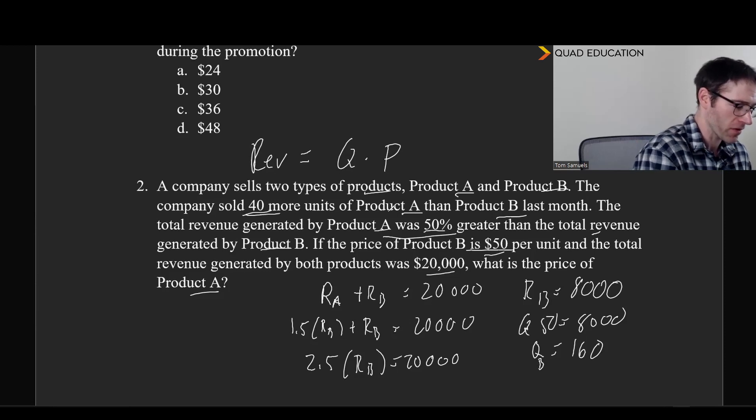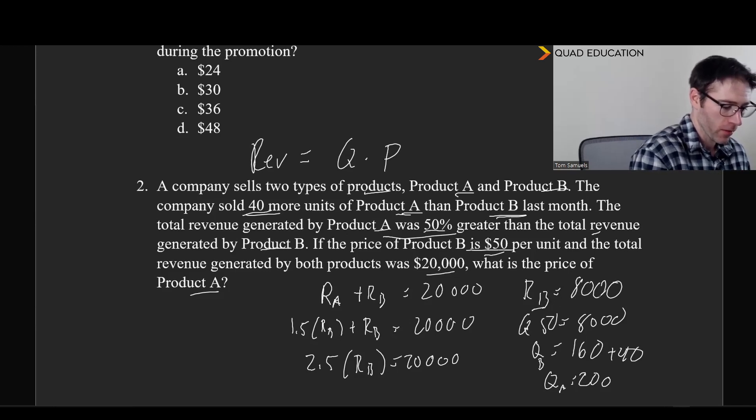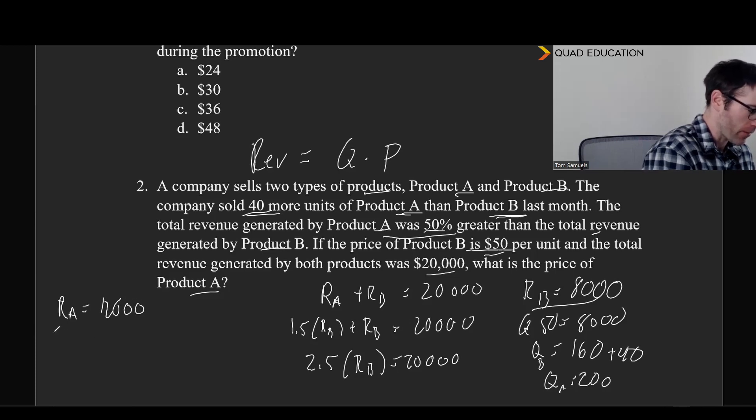Now, we can implement this 40 more units of A than of B last month. So, we know that our quantity for B was 160. Then we must have sold 40 more for quantity A. So, our quantity of A is going to be 200. And what we also know is that our revenue of B is 8,000. And our revenue of A is 1.5 times that. So, that is to say that our revenue of A is going to be 8,000 times 1.5, which is 12,000. That means that our quantity times our price is equal to 12,000. And since our quantity we know is 200 times our price, we can divide 12,000 by 200. We get our price of A, which is going to be 60.